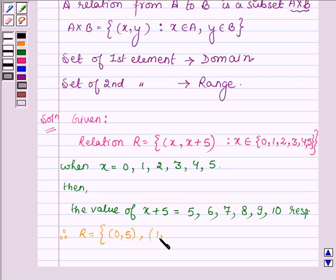Similarly, then we have (1, 6), (2, 7), (3, 8), (4, 9), and (5, 10).